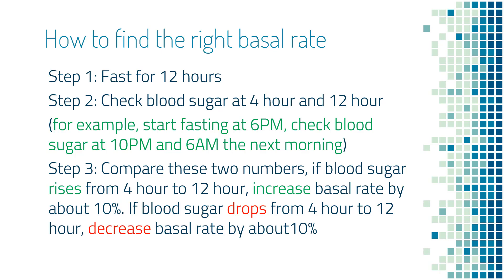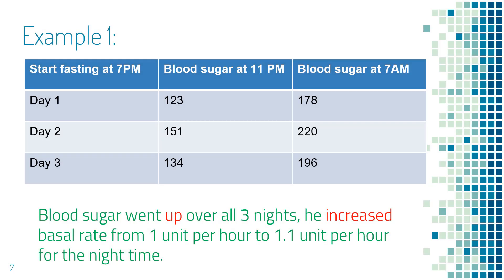Let's look at a few examples. This gentleman wanted to test his basal rate overnight from 11 p.m. to 7 a.m. So he started fasting at 7 p.m., checked blood sugar at 11 p.m., went to sleep, then checked blood sugar again at 7 a.m. the next morning, and had breakfast. He did this on three different days. On day one, blood sugar went up from 123 to 178. On day two, blood sugar went up from 151 to 220. On day three, blood sugar went up again from 134 to 196. Blood sugar went up from 11 p.m. to 7 a.m. over all three nights, so he needs to get more insulin overnight. He increased the basal rate by about 10% from 1 unit per hour to 1.1 units per hour for the night time.